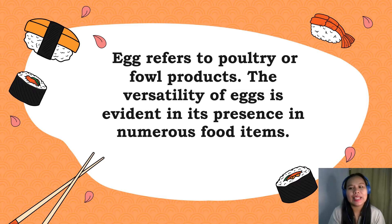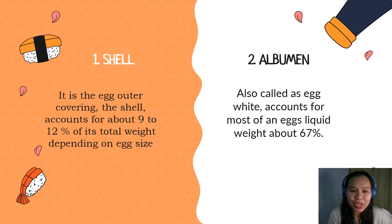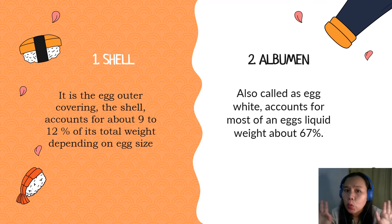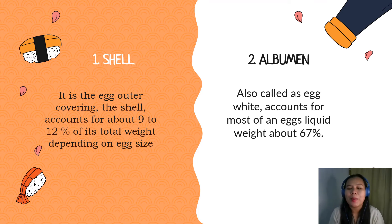But a closer scrutiny reveals a much more detailed structure of an egg. Let us discuss them one by one. This picture shows the physical structure and composition of eggs. The first part of the egg is the shell. It is the egg outer covering, and the shell accounts for about 9 to 12 percent of its total weight, depending on the egg size. Remember, students, it is not advisable to wash egg prior to storing, because this will wash out the bloom or the cuticle, which seals the pores and helps reduce moisture losses. The bloom or the cuticle also is responsible in preventing bacterial penetration to the eggshell. So remember to wash egg only if you are about to cook it.